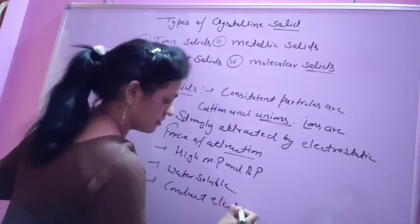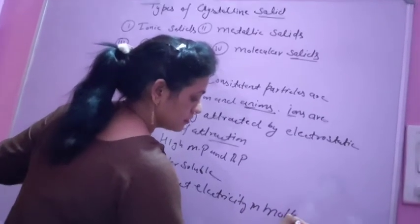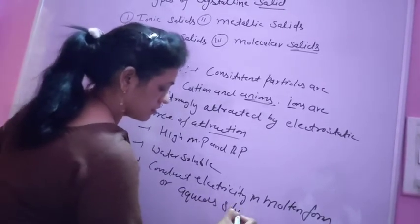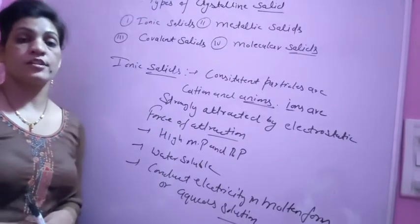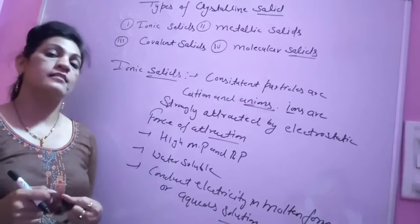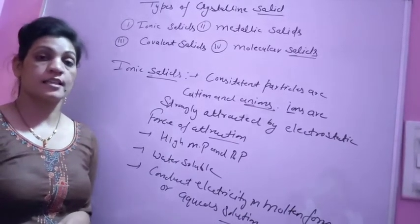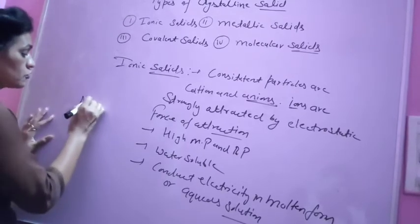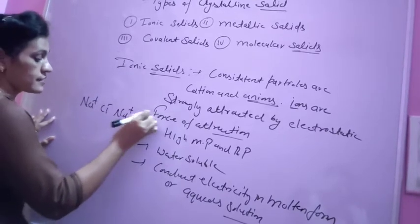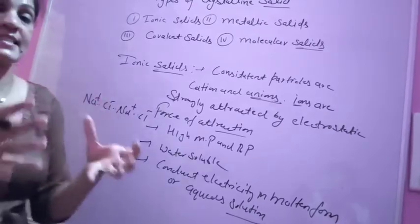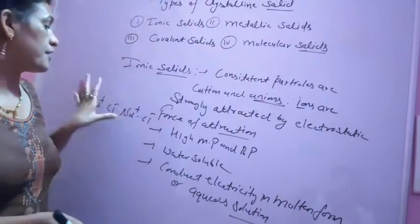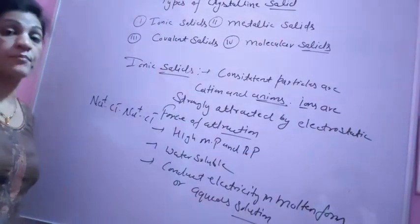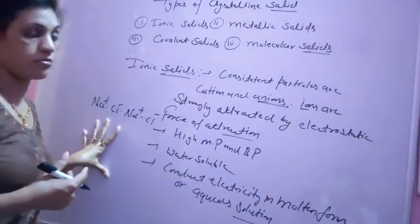Ionic solids do produce electricity in molten form or aqueous solution. Why does solid NaCl not conduct electricity, while the aqueous solution of NaCl is a good conductor? In solid NaCl, sodium and chloride ions are not free to move — they are strongly held by the strong electrostatic force of attraction in a bound crystal form. But when dissolved in water, the ions become free, and the aqueous solution conducts electricity.